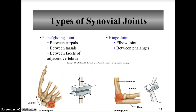Plane or gliding joints have articulating surfaces that are nearly flat or slightly curved. These joints are found between carpals, between tarsals, and between the facets of adjacent vertebrae. Their movement allows for sliding or twisting — for example, a slip disc involves sliding movement, and the carpals allow a certain type of movement with a little rotation.